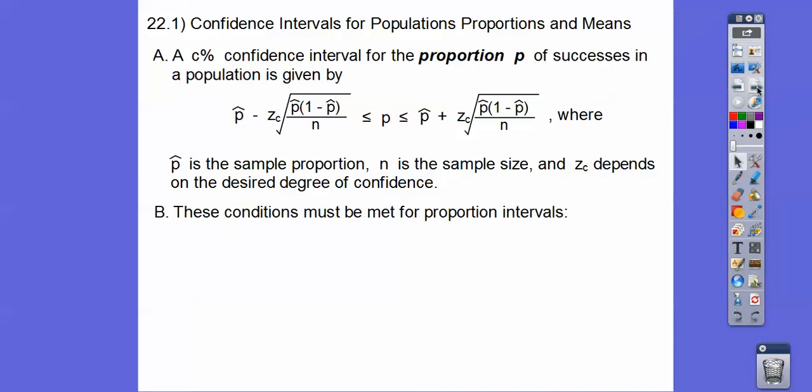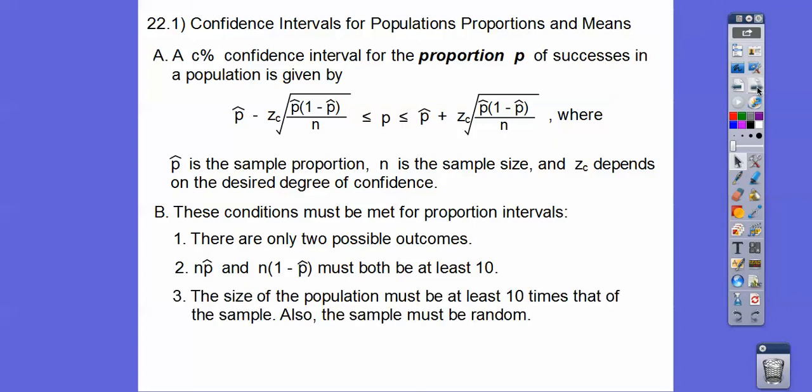These conditions must be met for proportioned intervals. There's only two possible outcomes, success or failure, or on or off, or it works or doesn't work. N P hat and N times (1 minus P hat) must both be at least 10. And the size of your population has to be at least 10 times that of your sample size. Also the samples have to be random.